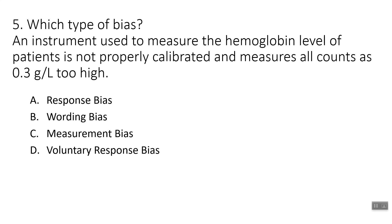Which type of bias do we have here? An instrument used to measure the hemoglobin levels of patients is not properly calibrated and measures all counts as 0.3 grams per liter too high. The way that we are measuring things is messed up — that makes this measurement bias. It's an easy fix: we just go back and subtract 0.3 from all of our data.